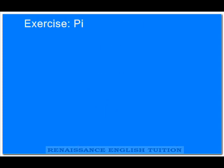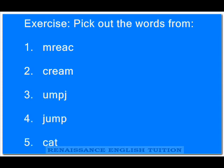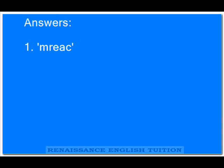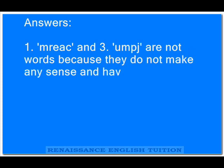Now it is time to do some practice. Which of the following are words? 1. Mreek. 2. Cream. 3. Umbj. 4. Chump. 5. Cat. The answer is: 1. Mreek and 3. Umbj are not words because they do not make any sense and have no meaning.